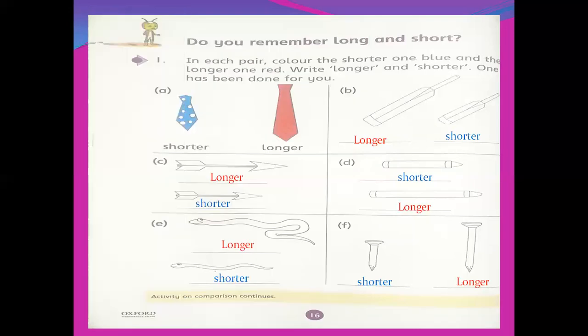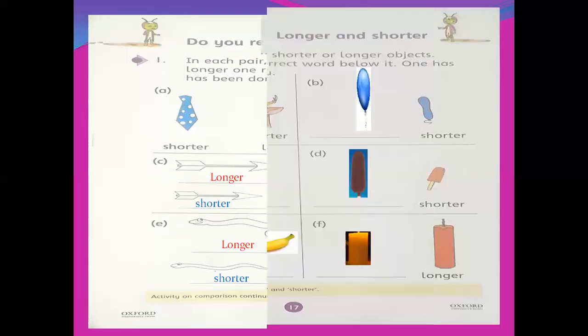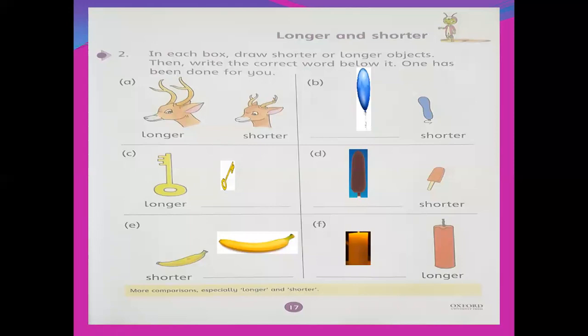Page number 17 — longer and shorter again. So what is the difference here? One picture — one pair — is given, and you will draw the second one. In each box, draw a shorter or longer object, then write the correct word below it. One has been done for you.